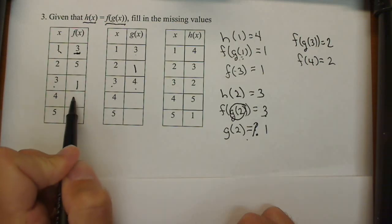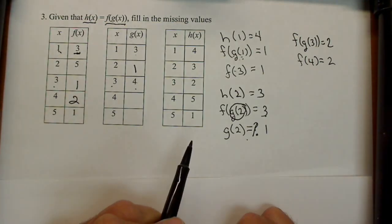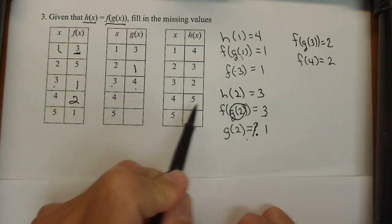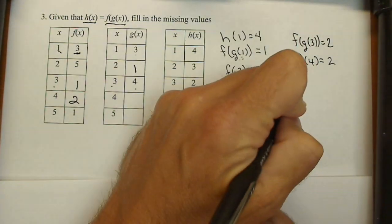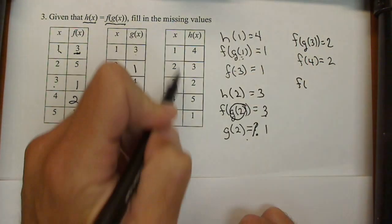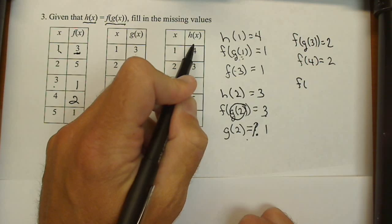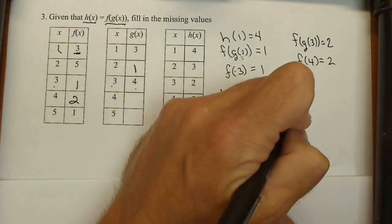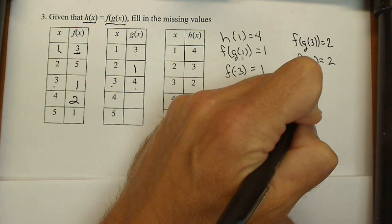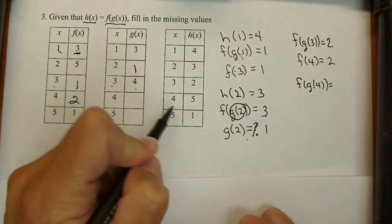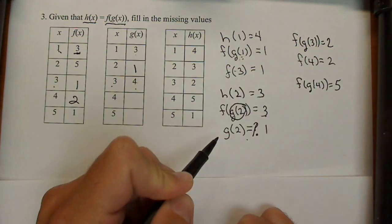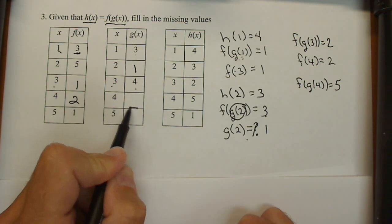f(4) - notice it was one of our missing values - must equal 2. All right, next one: f(g(4)). I'm basically doing this with h, but remember h is f(g), so I'm just skipping that very first step. f(g(4)) must equal 5. g(4) we don't know.